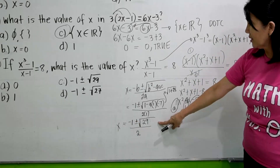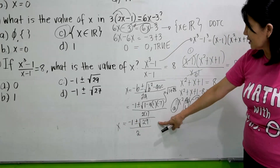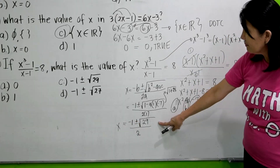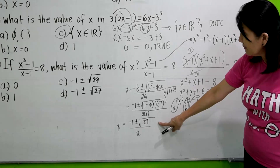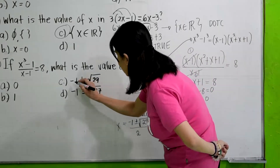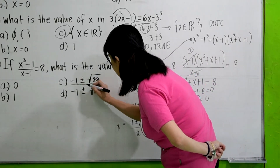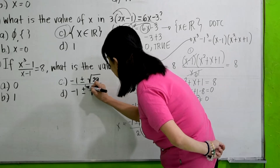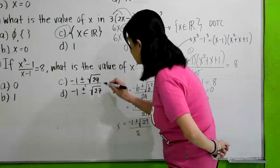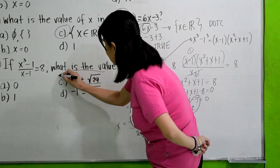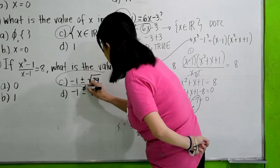So the answer is letter C: X equals negative 1 plus or minus the square root of 29, all over 2.